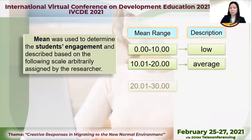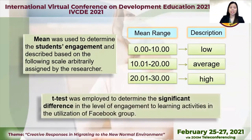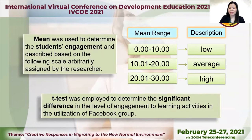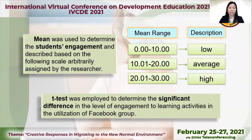As to the statistical tool, mean was used to determine the student's engagement and described based on the following scale arbitrarily assigned by the researcher: for the mean range of 0 to 10, the description is low; from 10.01 to 20, average; 20.01 to 30, high. The t-test was employed to determine the significant difference in the level of engagement in learning activities in the utilization of Facebook group.